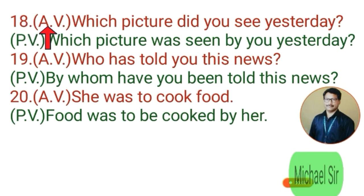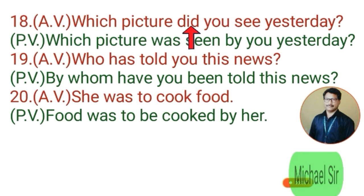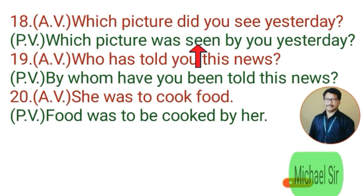Eighteenth example. Active voice: 'Which picture did you see yesterday?' 'Which picture' is object, 'did' is helping verb, 'you' is subject, 'see' is main verb, and 'yesterday' is adverb. When we make passive voice, 'which picture' becomes subject. Because this sentence is in past tense, the helping verb is also in past. Since 'picture' is singular, 'was' comes, then the third form 'seen,' then 'by you,' then the adverb 'yesterday.' Passive: 'Which picture was seen by you yesterday?'